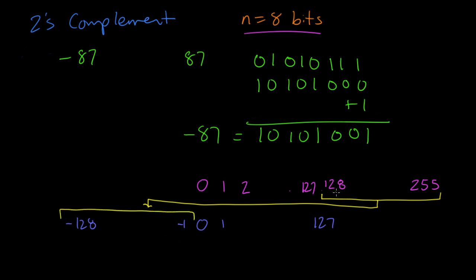So 128 becomes negative 128. 129 becomes negative 127, all the way up to 255 becomes negative 1. And it should be obvious here that the difference between this upper set of numbers and this lower set of numbers is exactly 256, which is the same thing as 2 to the nth. So the way to get from the top range of numbers to the bottom range of numbers is to subtract 256.